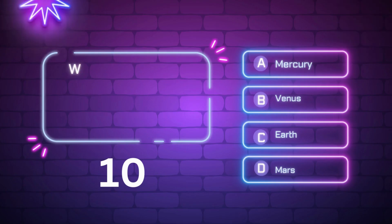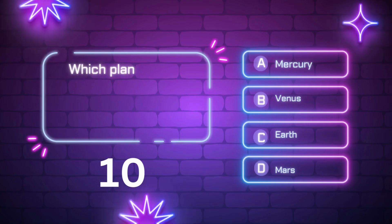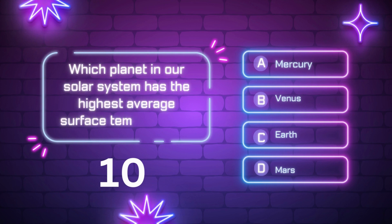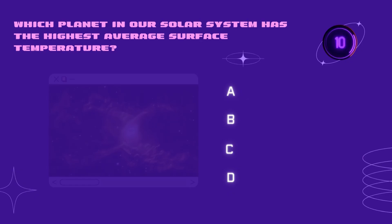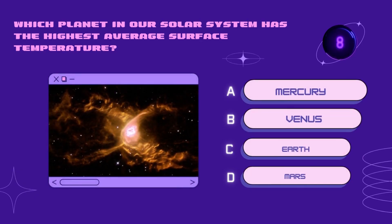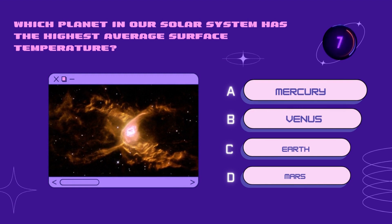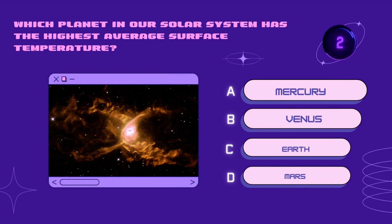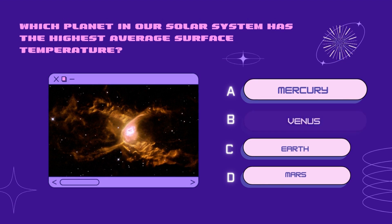Which planet in our solar system has the highest average surface temperature? Venus, Mercury, Earth, Mars. Your time starts now. Right answer is Venus.